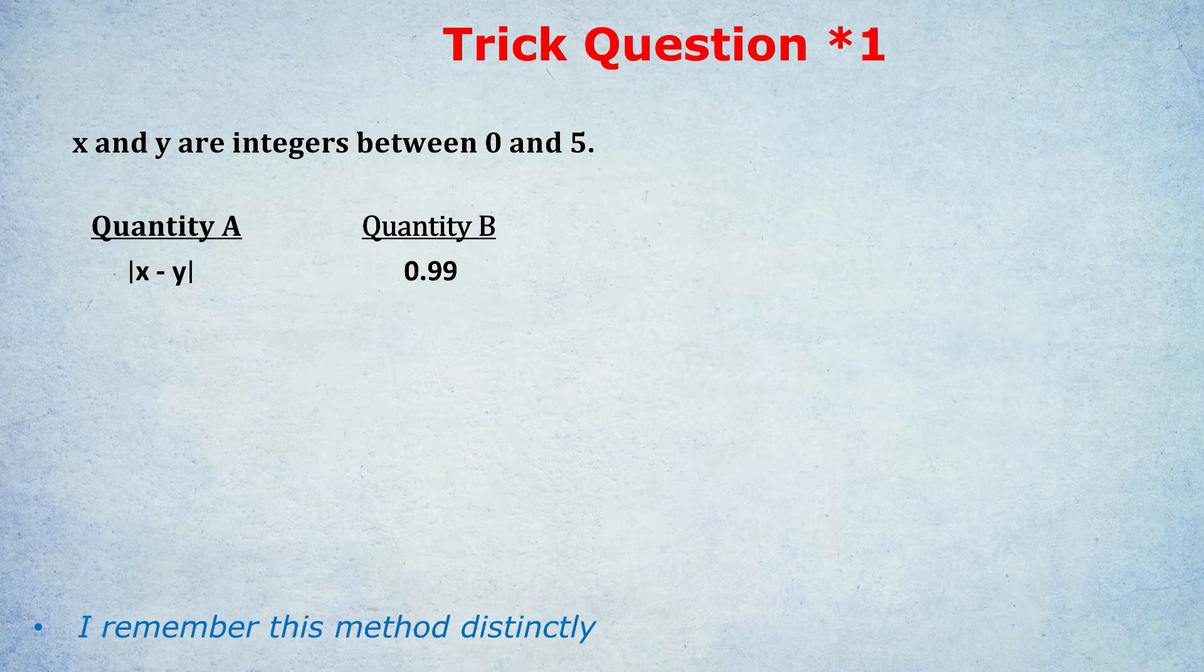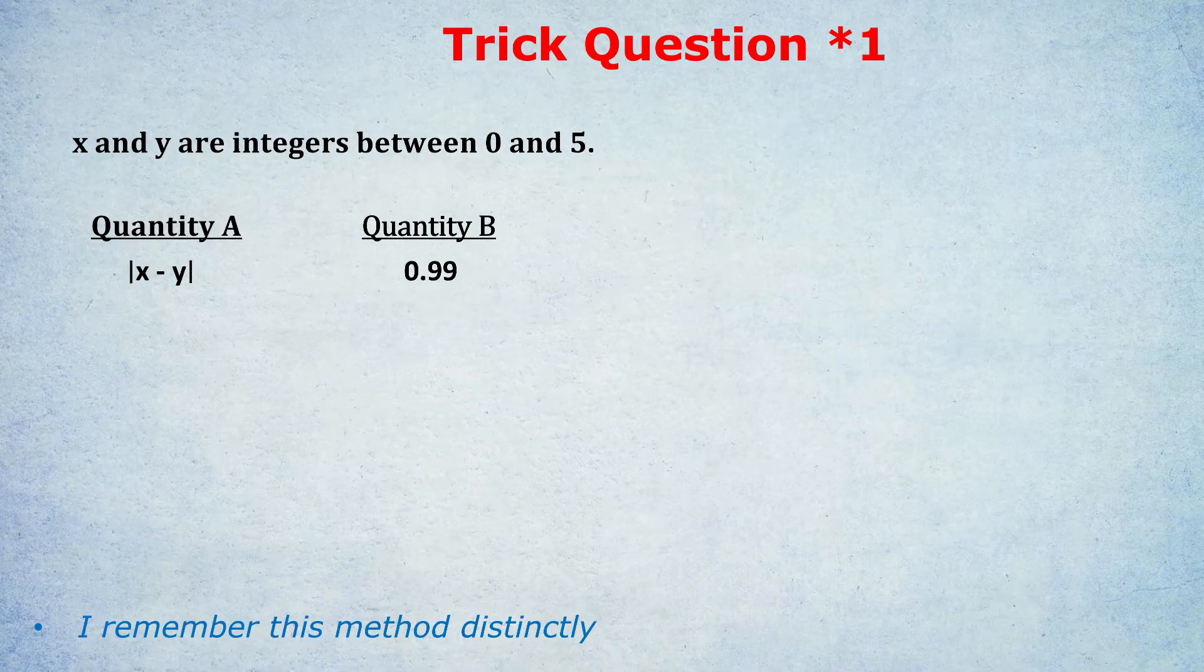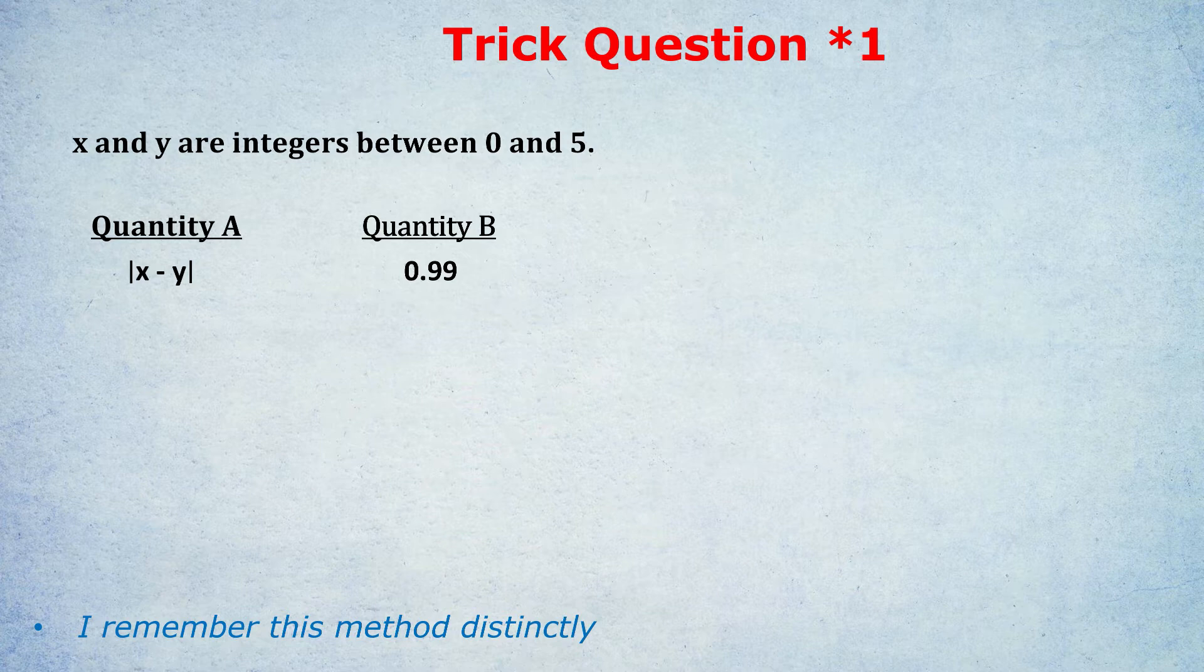The mistake, of course, is that the question never used the word distinct, and that's an important word that they missed out. They didn't say x and y are distinct integers, and the word distinct means different, that they're different integers. Because they didn't use that word distinct, we don't know if x and y are just the same number. It could be that x is 3 and y is 3, in which case 3 minus 3 is 0, and the absolute value of 0 is 0, making Quantity B bigger.